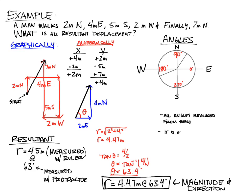As a note, it's okay to say that 330 degrees is the same thing as negative 30 degrees. At negative 30 degrees, you start at 0 and swing down 30. At 330 degrees, you start at 0, go all the way to 90, 180, 270, and then to 330.